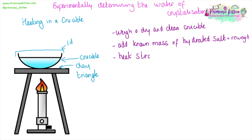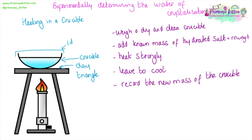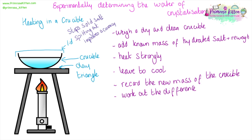You need to heat it strongly, and to do this we rest the crucible on a clay triangle while we heat it over the Bunsen burner. Because we're going to be picking it up again, you need to leave it to cool. We then record the new mass of the crucible and work out the difference. Different methods may or may not use a lid, but what the lid does is stop the solid salt spitting out, which improves the accuracy.